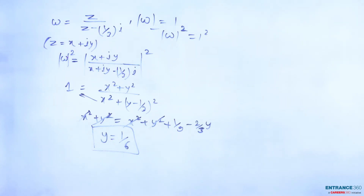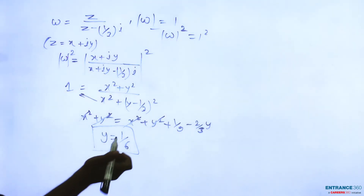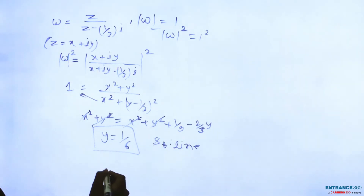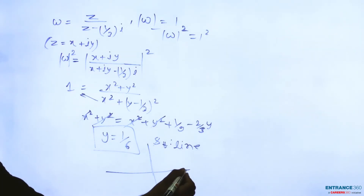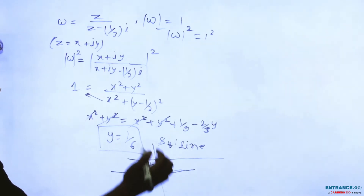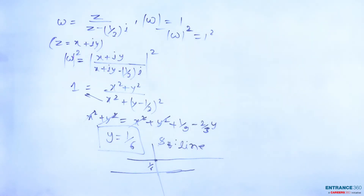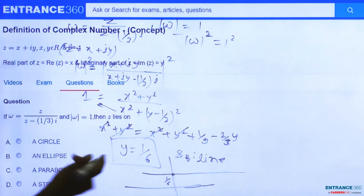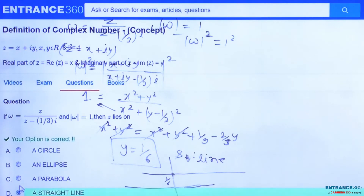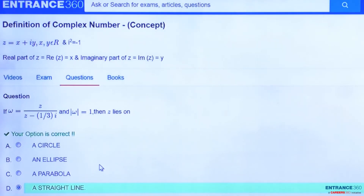y equals 1/6 represents a straight line. When we draw the graph, y = 1/6 is a horizontal straight line equation. Looking at the options, z lies on a straight line, so option D is the correct answer.